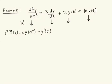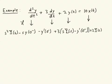Plus then the next term will be 3 times the transform of dy/dt, which is s·Y(s) minus y(0⁻). And then we get plus 2Y(s) equals 10X(s). So we've transformed each of these terms individually. The first one results in three terms, the second transform results in two terms, this results in a single term 2Y(s), and this transform results in a single term 10X(s).